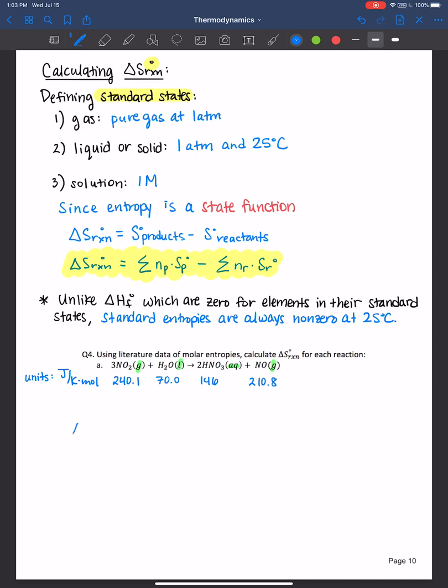And then to calculate the entropy of the reaction, it's products minus reactants. But we have to take into account the stoichiometric coefficients. So once again, make sure you're working with a balanced equation because we're going to take into account the stoichiometric coefficients here. And even if it's 1, I write it down so that when I'm doing other problems, I just don't forget that to include that. So products, so I'm going to take 2 times 146 for the nitric acid. There's 2 moles of nitric acid at 146 plus 1 times 210.8. So this was the products.